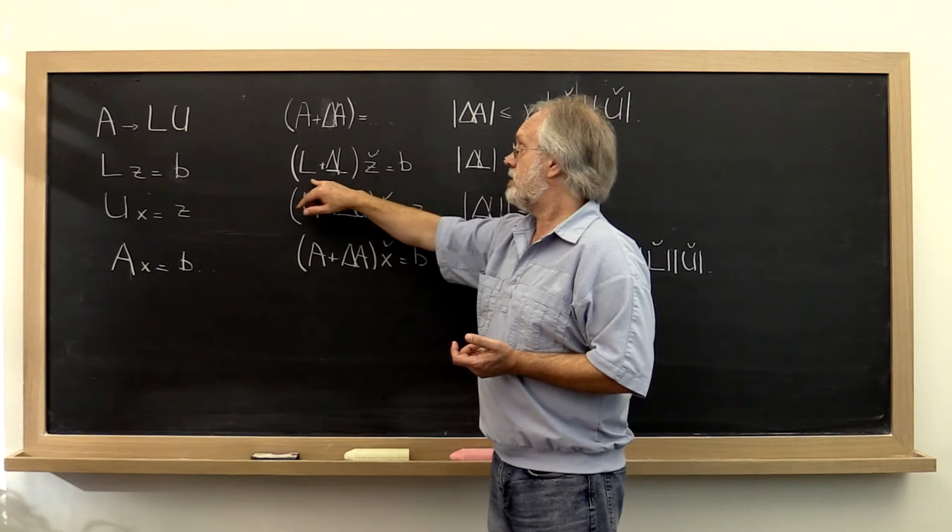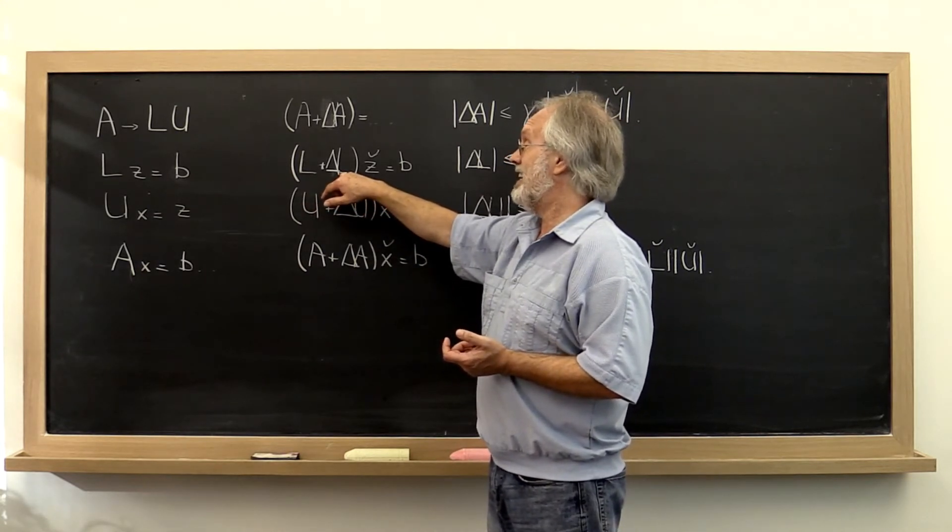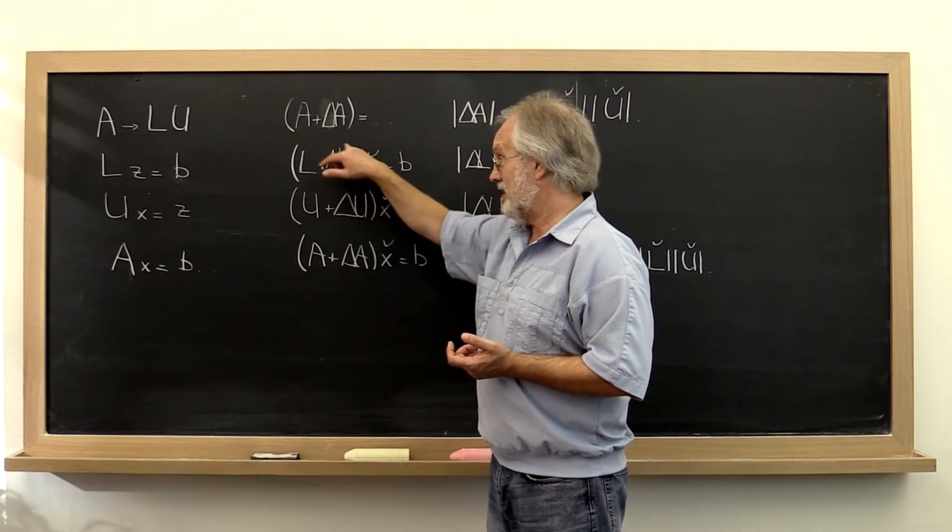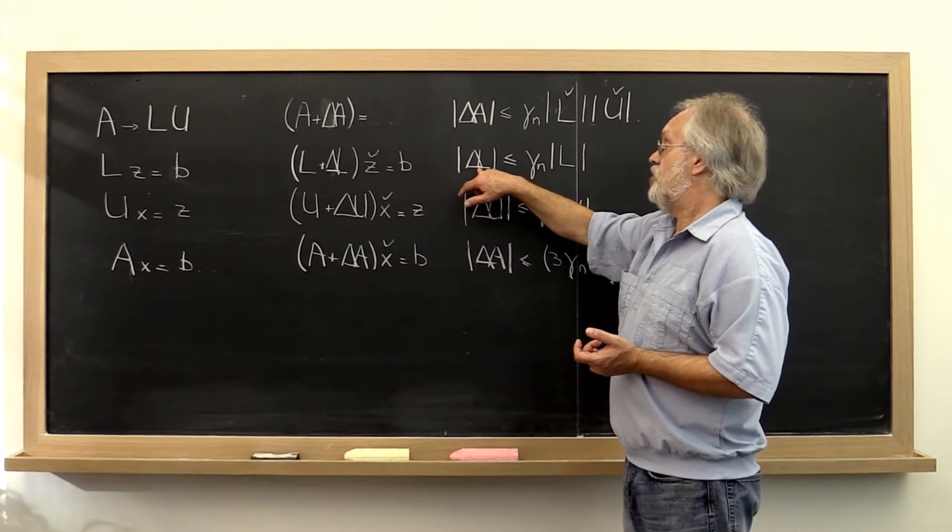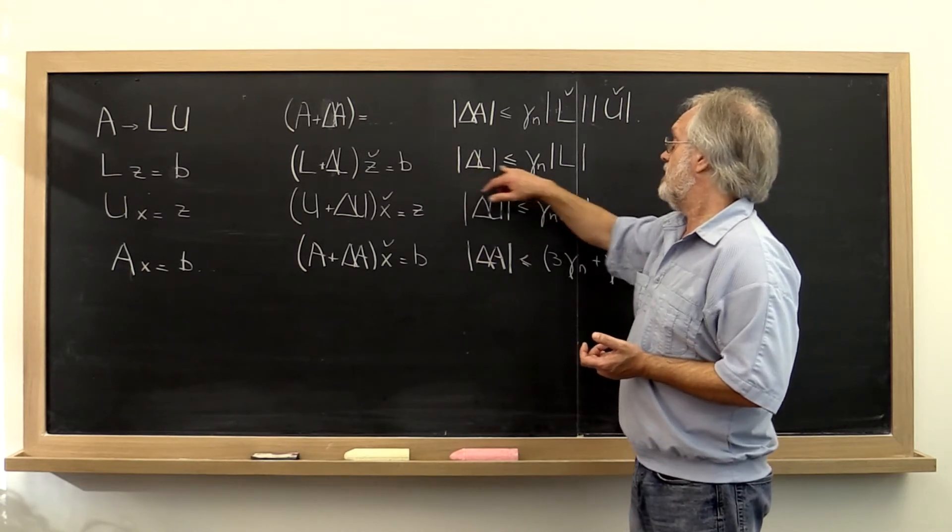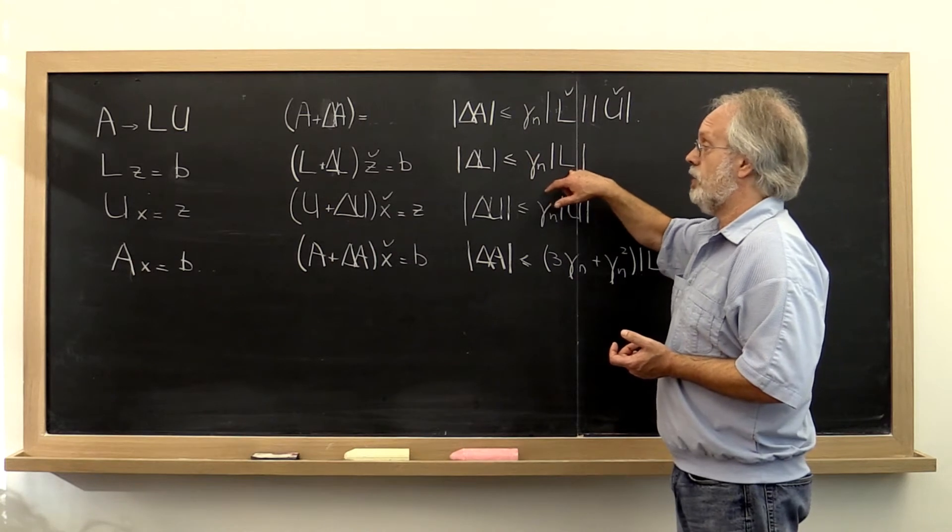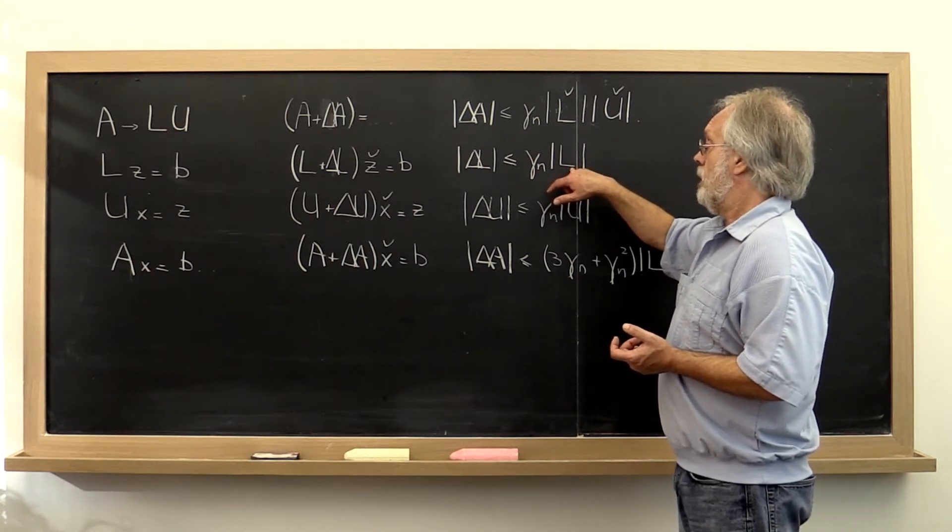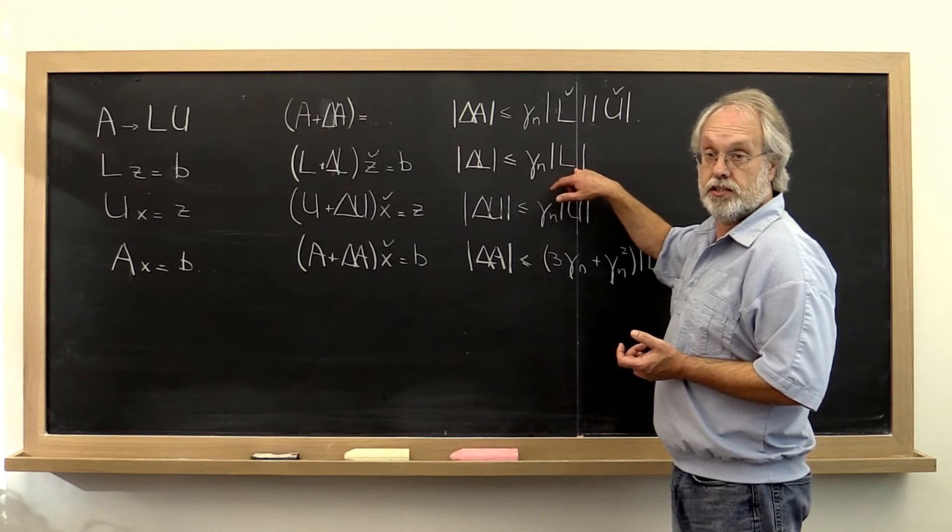is the exact solution to a lower triangular system that has been slightly perturbed with something that itself is a lower triangular matrix, where that change in the lower triangular matrix is bounded by gamma n times the absolute value of L. So that's actually a really nice result because it's in terms of the original matrix L itself.